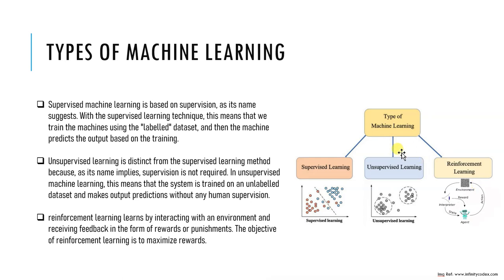In supervised learning, the algorithm is given labeled data, which means the data is already classified with the correct output. The algorithm learns to make predictions by mapping input features to the correct output. It's like a teacher supervising a student — giving correct answers and feedback. The algorithm tries to learn patterns and relationships in the data to generalize its predictions to new, unseen data.